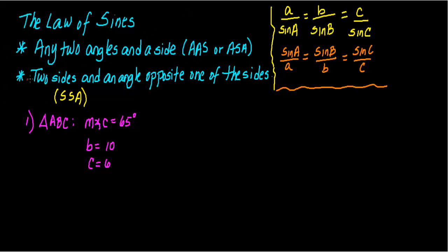This is two sides and an angle opposite one of the sides. When you have two sides of a triangle and an angle opposite one of the sides, we call this the side-side-angle case.